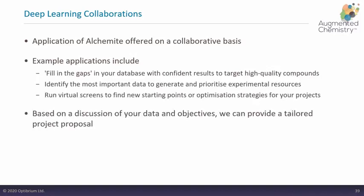Alchemite can plausibly be used to prioritize experimental resources, focus on high-quality predictions, and be regularly updated with new experimental data to gain more information. We're working on ways to reduce the bias from HTS data that we observed, and data transformation methods we've developed from that are looking promising. I'll hand back to Matt to summarize further applications.